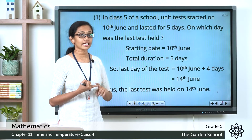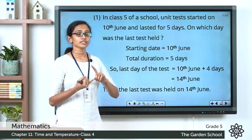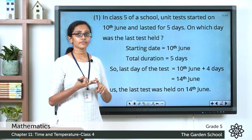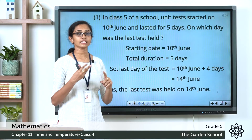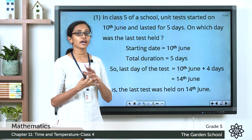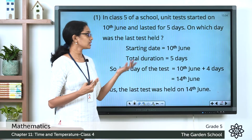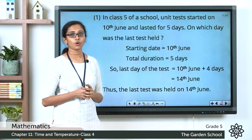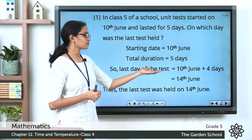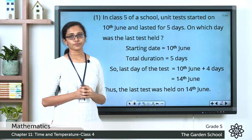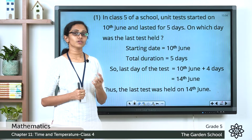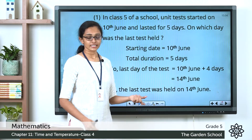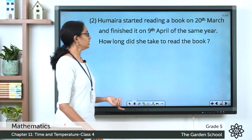So the last test was held on 14th June. It started on 10th June, then 11th, 12th, 13th, and 14th — 5 days — and the test got over on 14th June. I hope this is clear to you. Now we will see the next example.